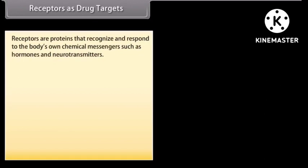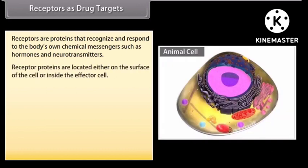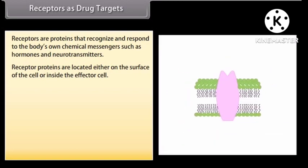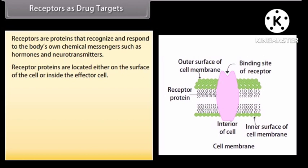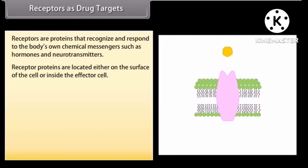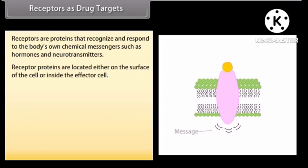Receptors are proteins that recognize and respond to the body's own chemical messengers such as hormones and neurotransmitters. Receptor proteins are located either on the surface of the cell or inside the effector cell. In the body, the message between two neurons and between neurons and muscles is communicated through chemical messengers, which are received at the binding sites of the receptor. To accommodate a messenger, the shape of the receptor site changes, bringing about the transfer of the message to the cell. Thus, receptors perform two essential functions.